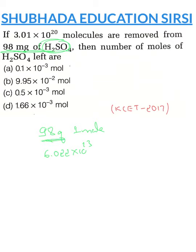In 98 milligrams of H2SO4, overall there are 6.022×10^20 molecules.